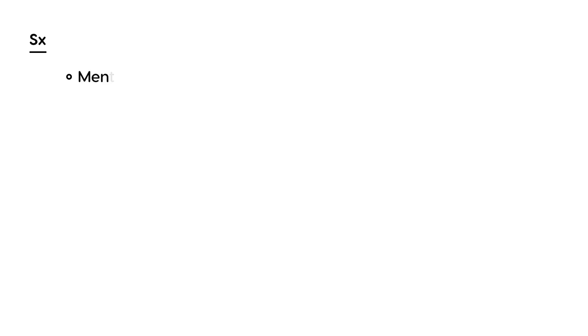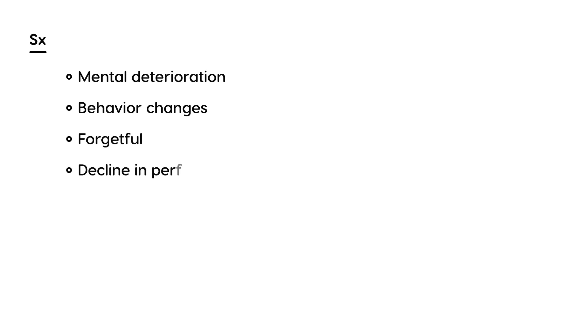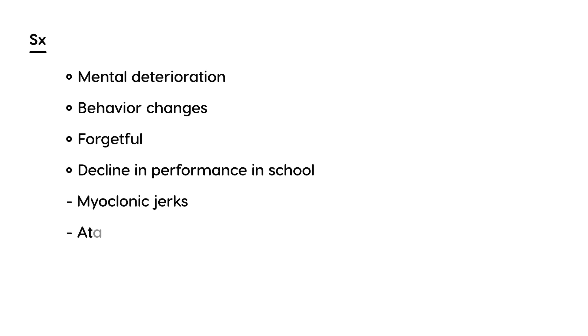In terms of symptomatology and presentation, the child initially appears normal, then undergoes a deterioration beginning with behavioral changes. The child is described as forgetful, with a decline in performance in school. Later, this progresses to much more serious symptoms, including myoclonic jerks, ataxia when the child walks or attempts to walk, and seizures.